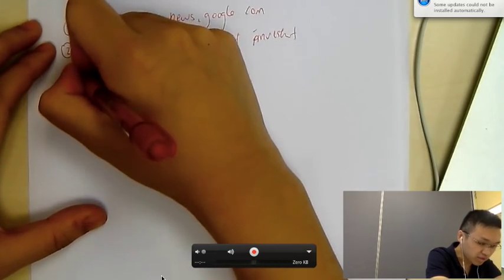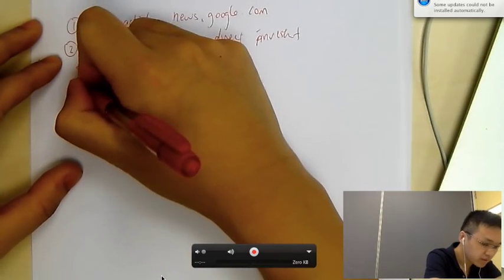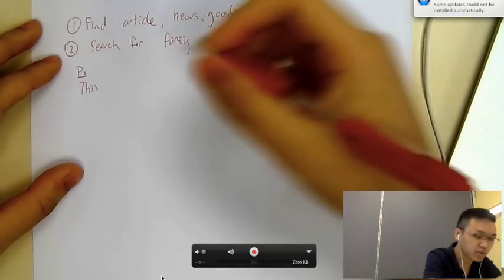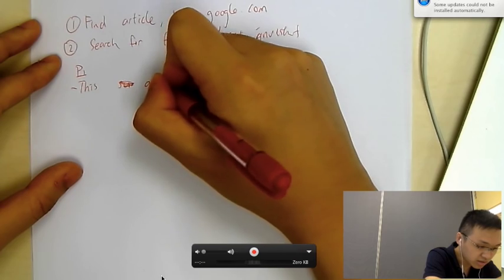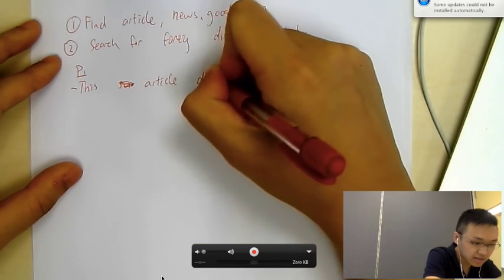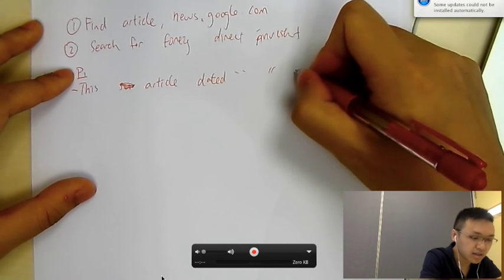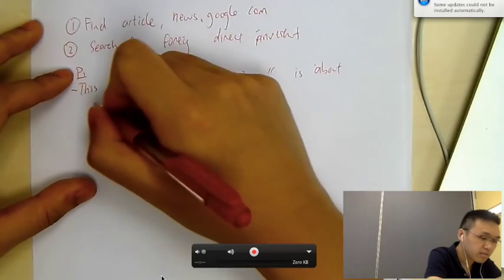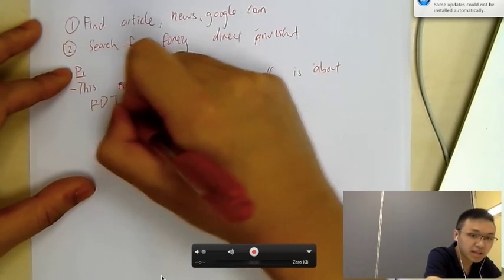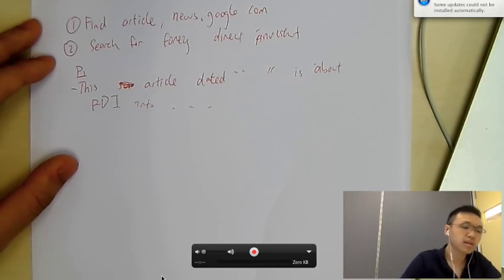So, I'll give you a very basic structure first. So, when you start off, you should say, this, the first sentence is always a summary. So, in the summary, you say something like this. This article dated a certain date is about foreign direct investment, FDI, into a certain country.